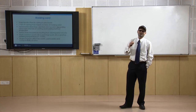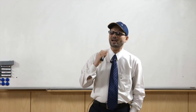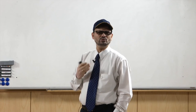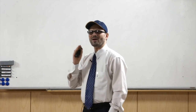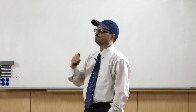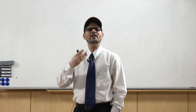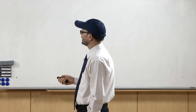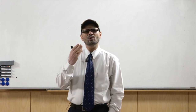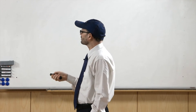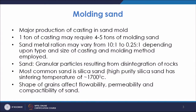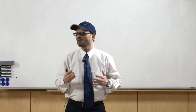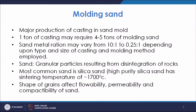Since we are going to confine our studies to mold material that is sand — because sand is principally the used molding material — we will confine our studies to molding sand. Molding sand means the sand which is used for making molds. For 1 ton of casting you may require 4 to 5 tons of molding sand. The sand-metal ratio may vary from 10:1 to 0.25:1, depending on which type of process, type and size of casting, and molding method employed.